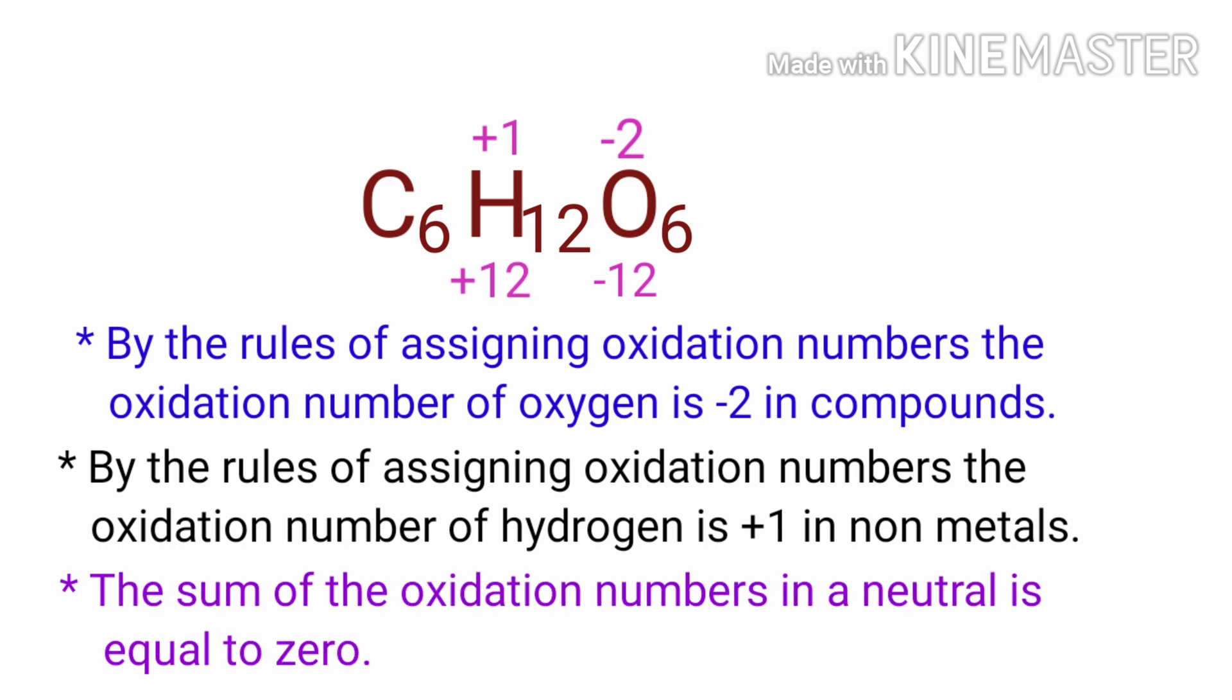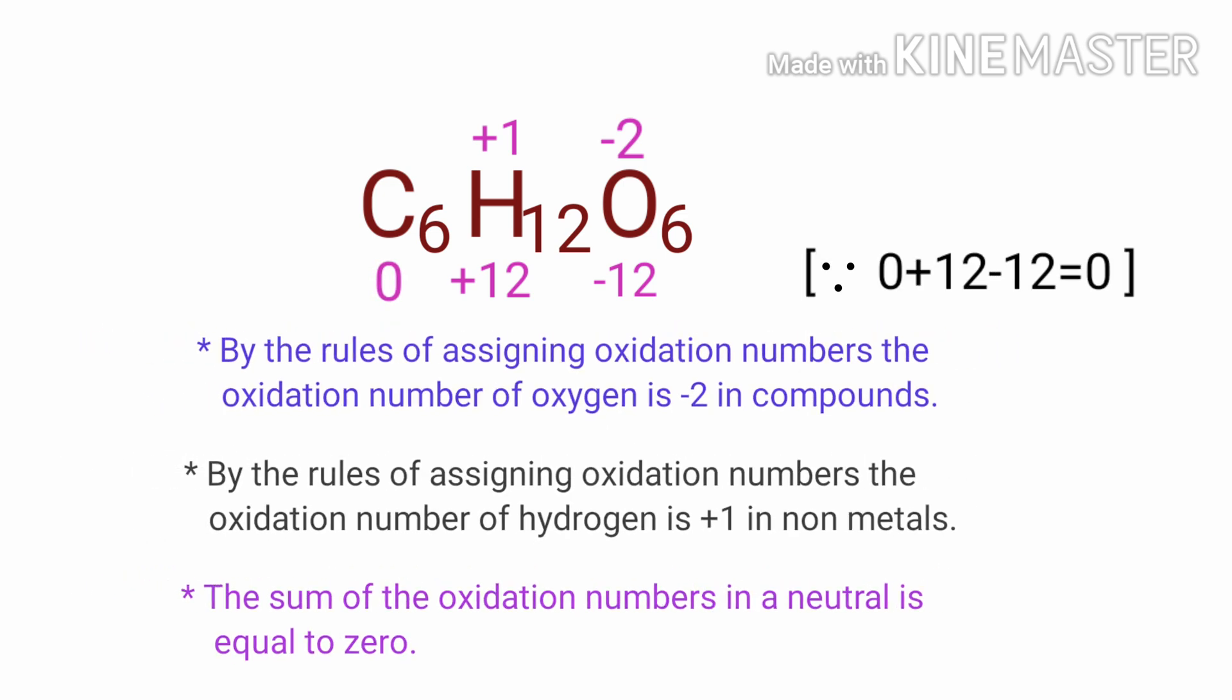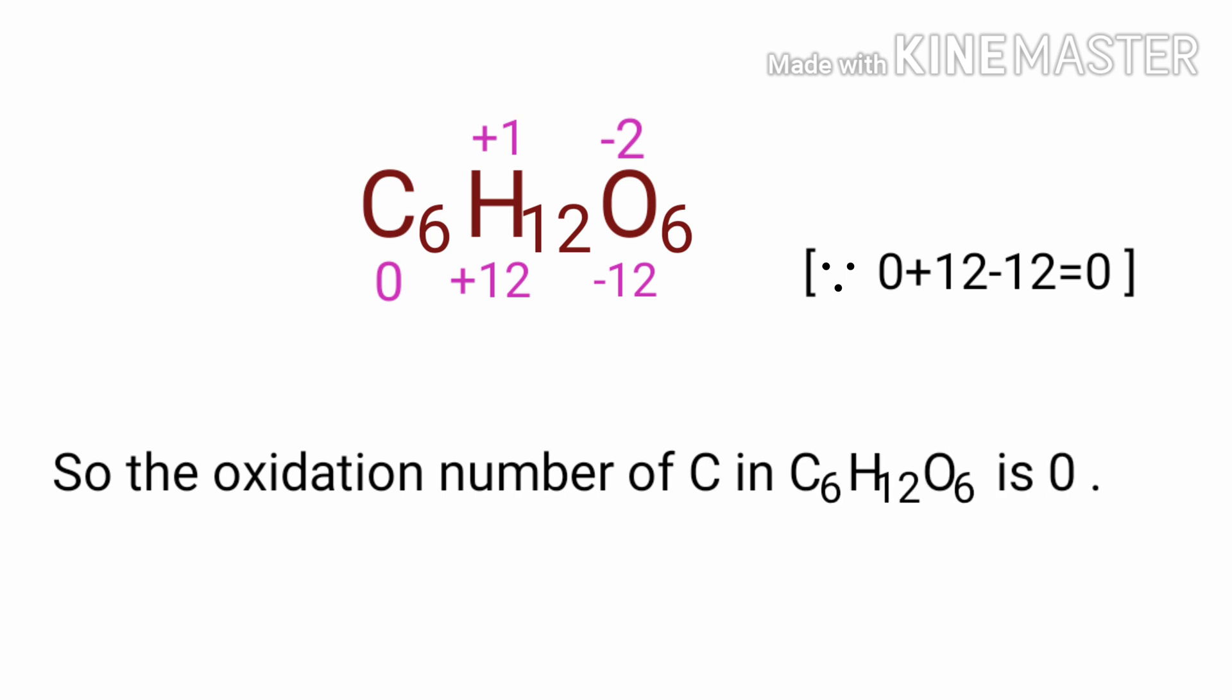As per rule, in a neutral compound, the numbers along the bottom must add up to 0. So the number under C must be 0. So the oxidation number of carbon in glucose is 0.